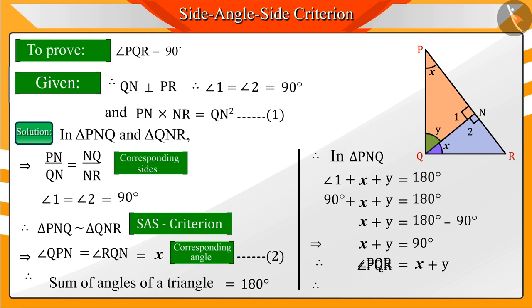Hence, angle PQR will be equal to 90 degrees. And this is what we had to prove. I hope you too solved this question the same way.